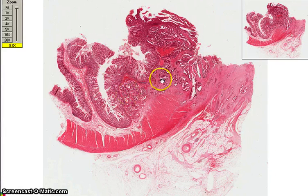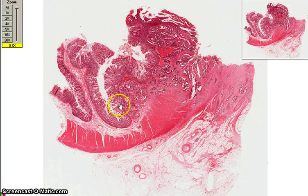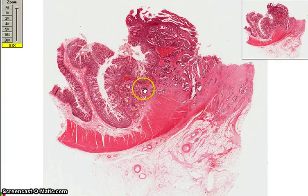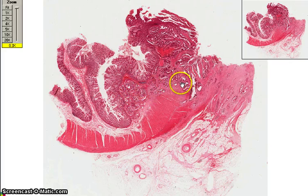There is an obvious area of abnormality over here, and this is normal mucosa, normal mucosa, all the way up to here. You can see some abnormal things going on in the submucosa, going down into the muscularis propria as well.